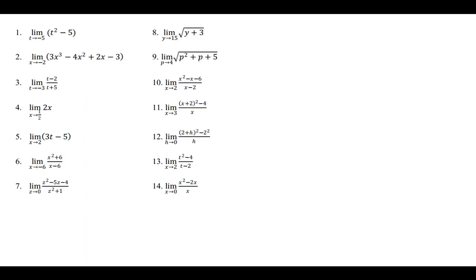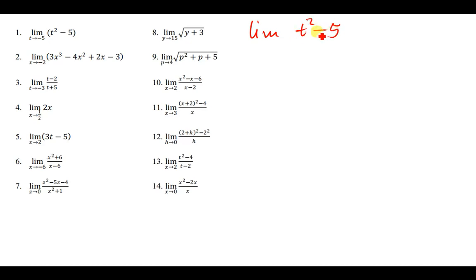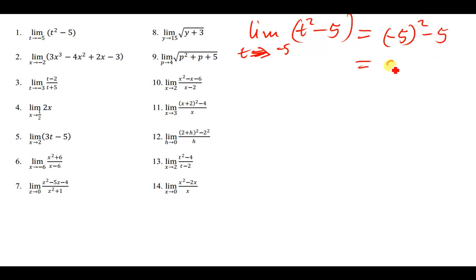Let's look at the examples. The first example is the limit as t approaches -5 of t² - 5. For these questions, most are straightforward — you simply substitute the value. Replace t with -5: you get (-5)² - 5 = 25 - 5 = 20. So the answer is 20.